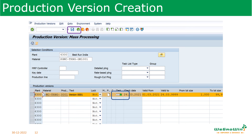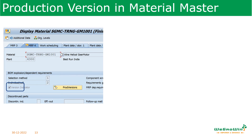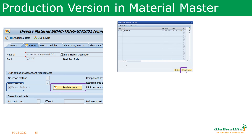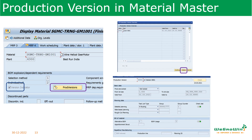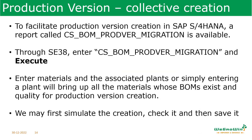Once all details show green, save the record — the production version is created. Now when you go back to the material master, you will see a tick mark in the production version indicator where before it was blank. By clicking the production version button within the material master itself, it takes you to a page where you can select the line and click Details to see the routing and production version details. The BOM side and routing both show green, confirming the production version is created and allocated properly.